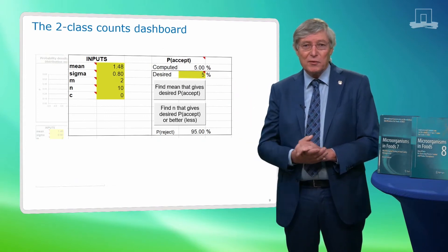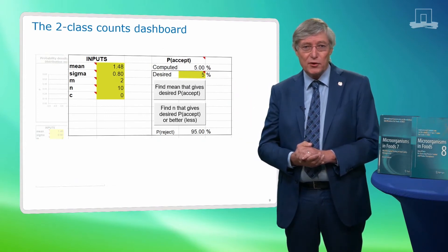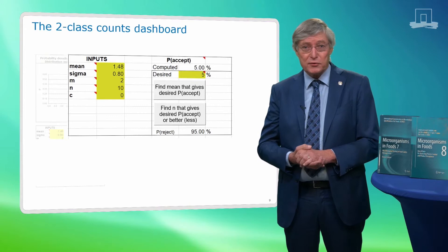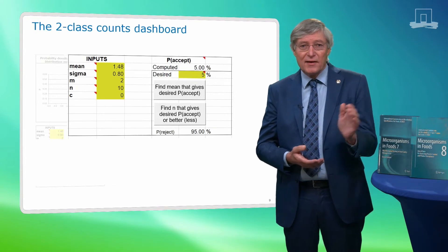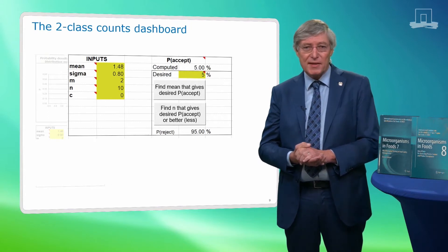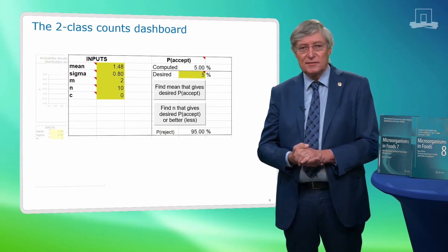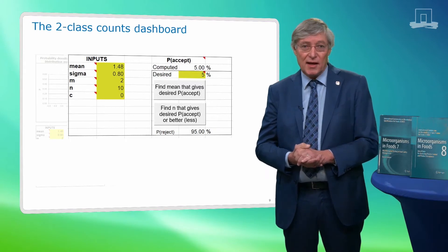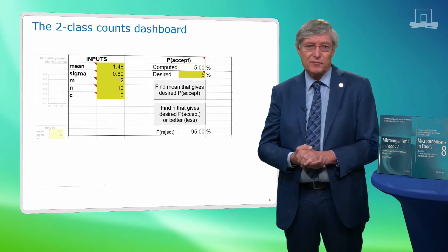Top left, under inputs, you will find the data entry cells for the mean, sigma, small m, n, and c. Note that values for small m, sigma, and mean are in log CFU per gram. To the right, there is an entry cell next to the cell labelled 'desired'. Here, the value for p-accept — the confidence level with which a non-compliant lot is accepted — is entered. Note the p-reject value below the two grey boxes, which is complementary to the p-accept value. A p-accept of 5% corresponds to a p-reject of 95%.